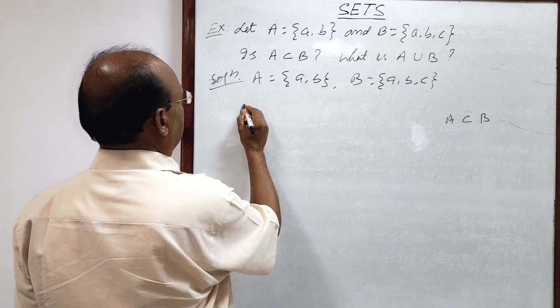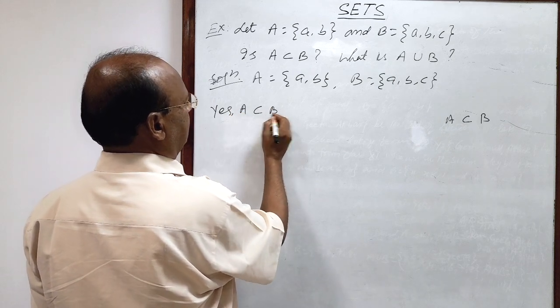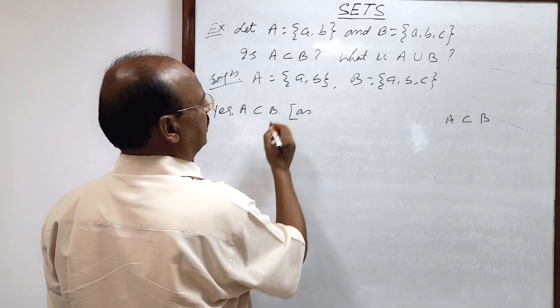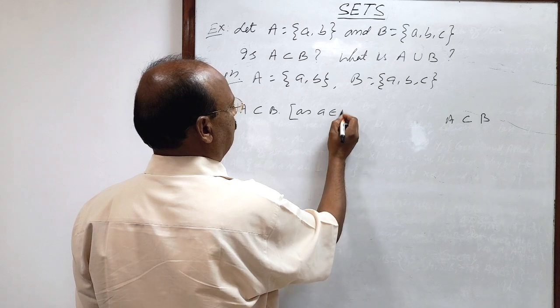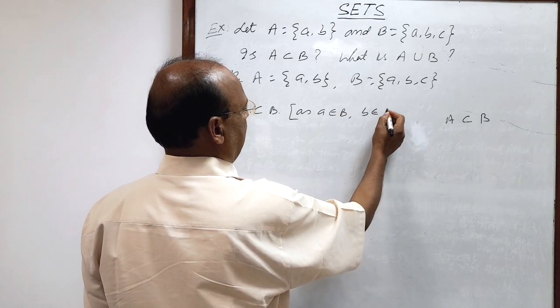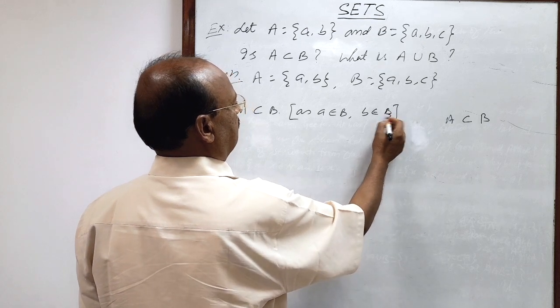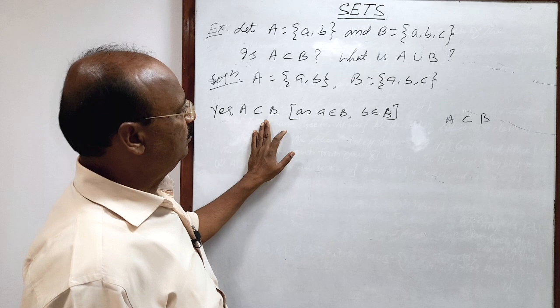Therefore, A is a subset of B. What is the reason? Since these two elements of set A, a as well as b, are both available in set B, A is a subset of set B.